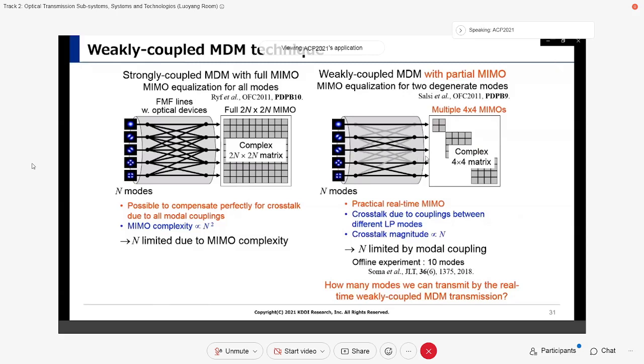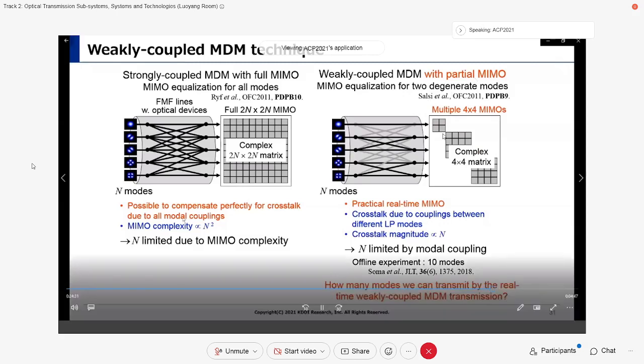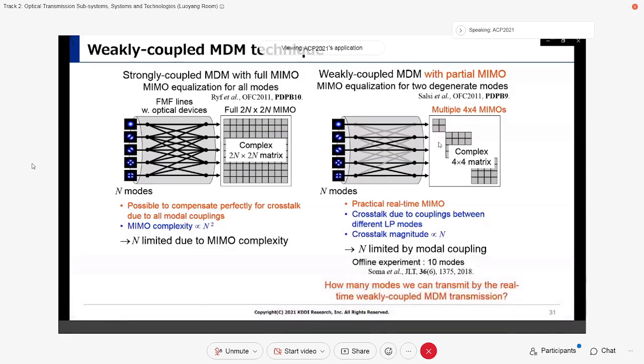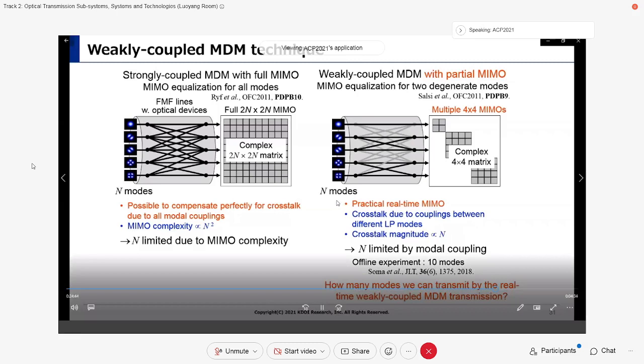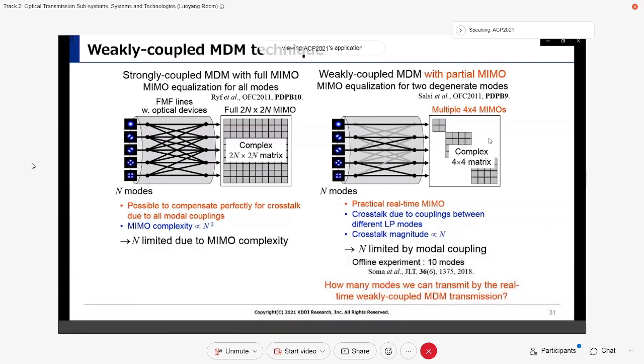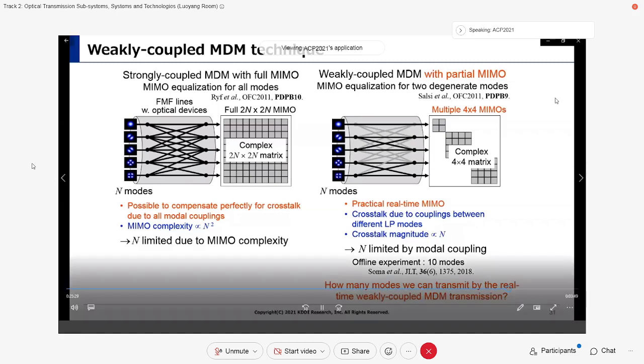The left and right figures show strongly coupled MDM approaches and weakly coupled MDM approaches, respectively. In strongly coupled MDM, such as the coupled multiple fibers, the number of modes N is limited due to MIMO complexity. On the other hand, in weakly coupled MDM approaches, the N by N MIMO matrix becomes sparse by utilizing spatially designed multimode fiber and mode multiplexer. The sparse N by N MIMO matrix can be decomposed into many 4 by 4 MIMO matrices. Each 4 by 4 MIMO matrix represents inevitable cross-talk between two degenerate modes. MIMO DSP only solves these 4 by 4 MIMO matrices. In this approach, the number of modes N is limited by modal coupling rather than MIMO complexity.